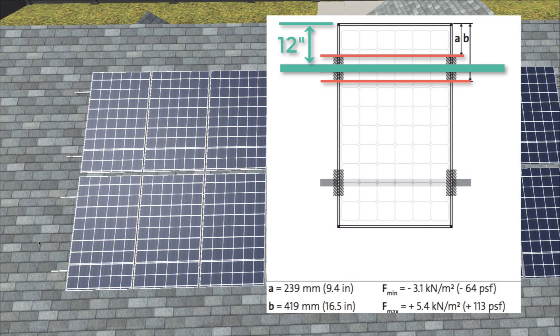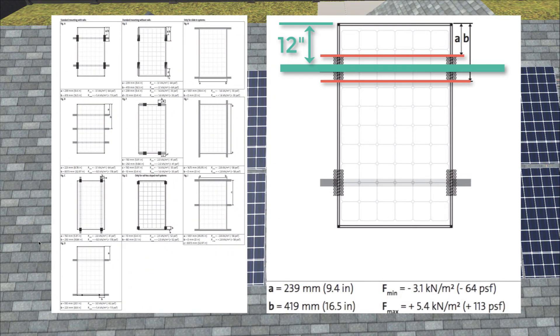I wanted to bring this up so you would know how your system designers come up with the location for where to mount the rails. But also so that field installers can know that if they have to make field adjustments, there are guidelines that will tell you where you can mount those rails.